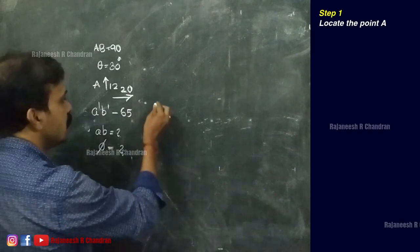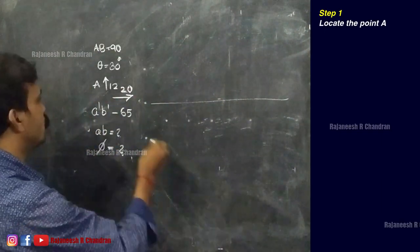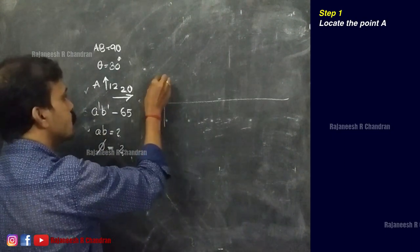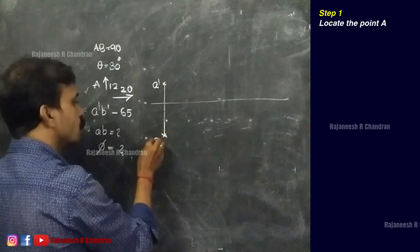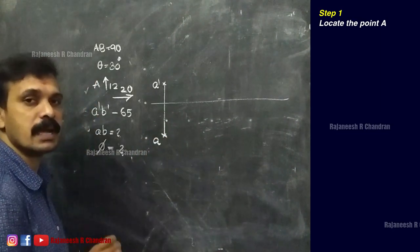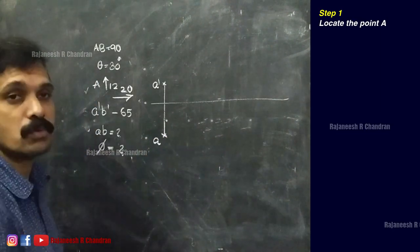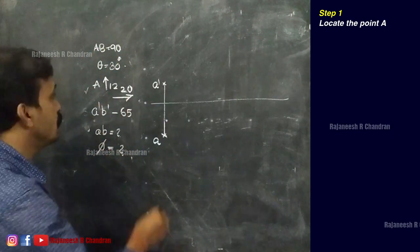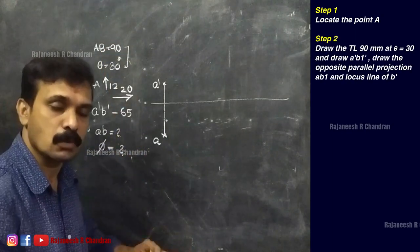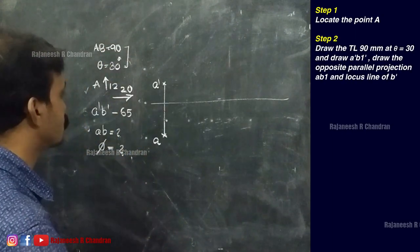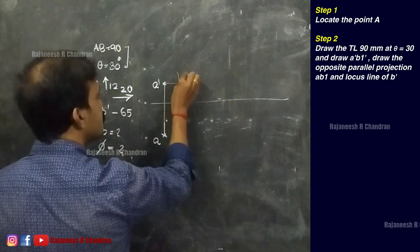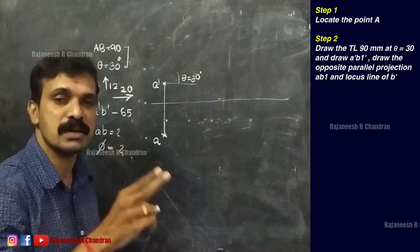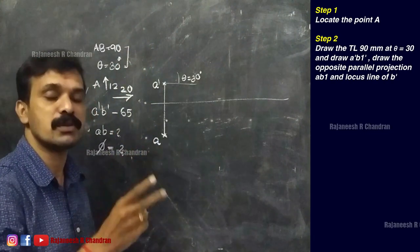The first step is locating point A. At a distance of 12 mm above HP and 20 mm in front of VP, we locate point A completely. Now, true length is given and true inclination is given. We know that true length and true inclination are always associated together.